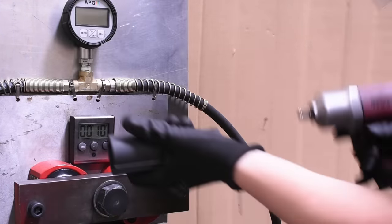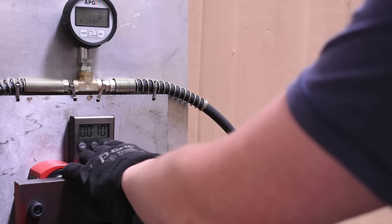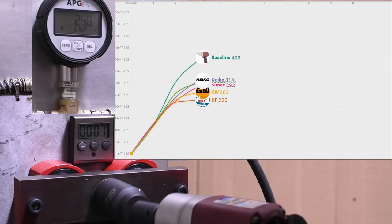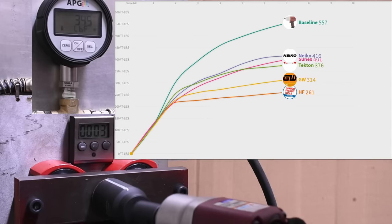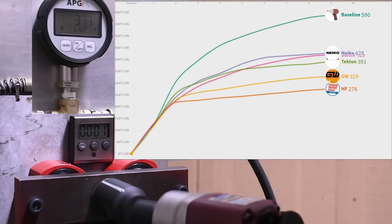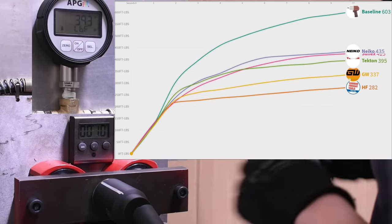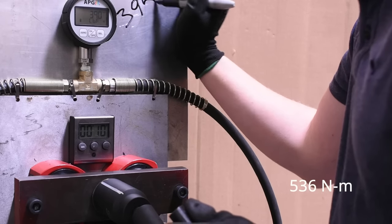Last up is the Tekton, twelve dollar universal. This is also pinless. Let's see how it does. So three ninety five there, just five percent more loss than the SunX, but thirty four, thirty five percent total.